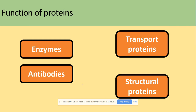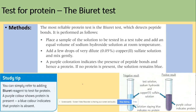Functions of proteins include enzymes, antibodies, transport proteins, or structural proteins. The test used to identify proteins in a food sample is called the Biuret test. The Biuret reagent on its own has a blue colour, but if the solution contains peptide bonds, it will turn purple. Purple is the positive result — it shows that peptide bonds have been detected.